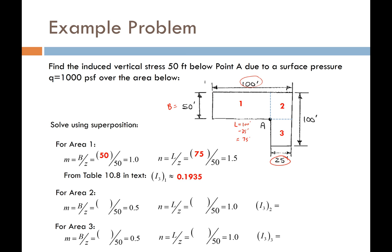For area number 2, the width B is 25 feet, and the length L is 100 feet minus 50 feet, giving L = 50 feet. So M = 25/50 = 0.5, and N = 50/50 = 1.